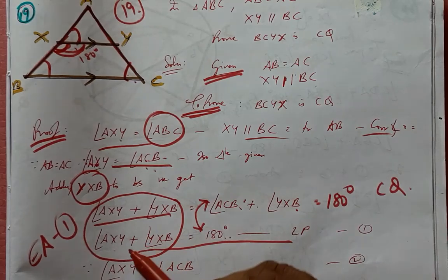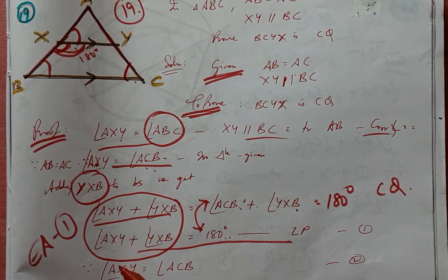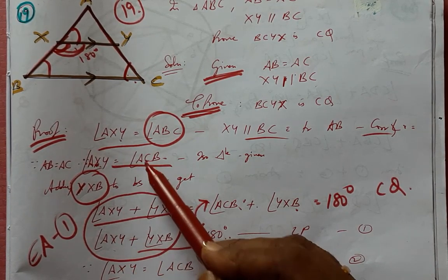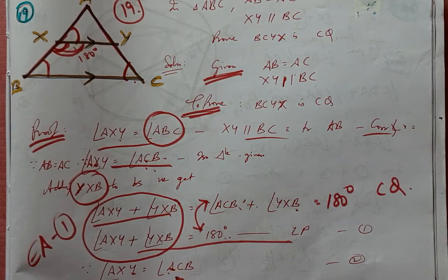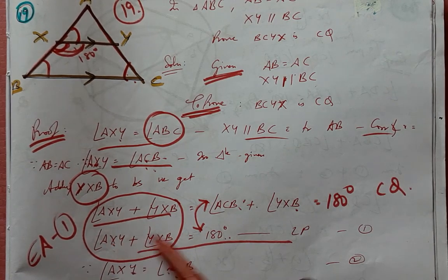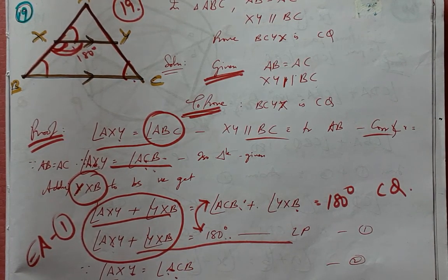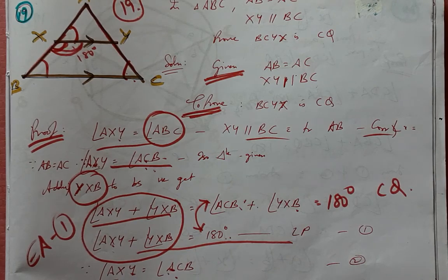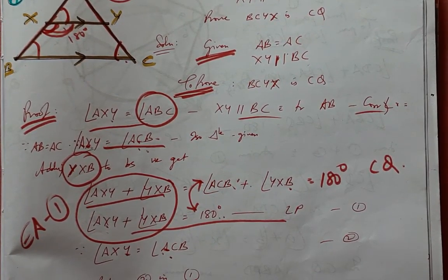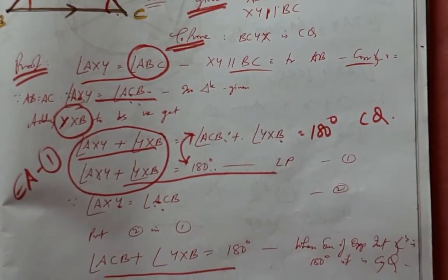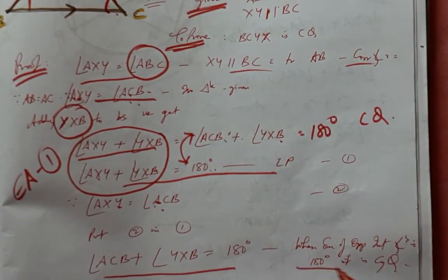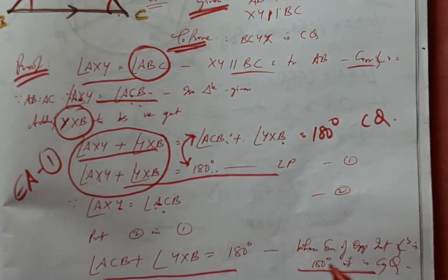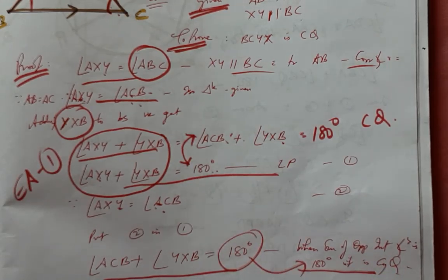Apart from that, we can even elaborate that AXY equals ACB, therefore we can substitute and get the same proof. When the sum of opposite angles is 180, it is a cyclic quadrilateral.